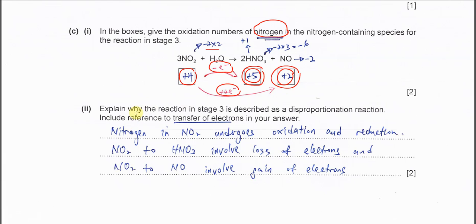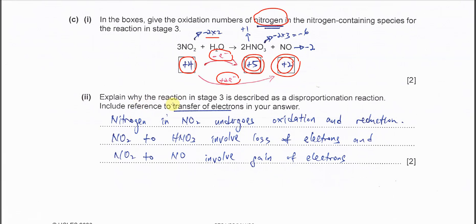Part C(ii): Explain why the reaction in stage 3 is described as a disproportionation reaction. Include reference to transfer of electrons.